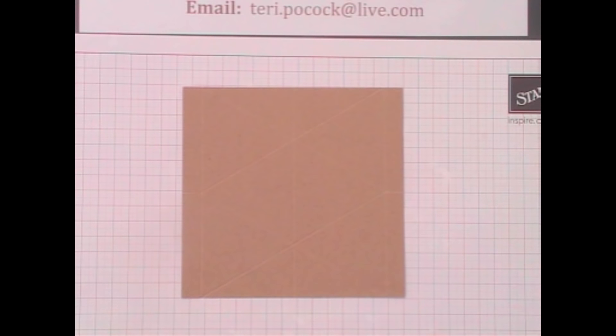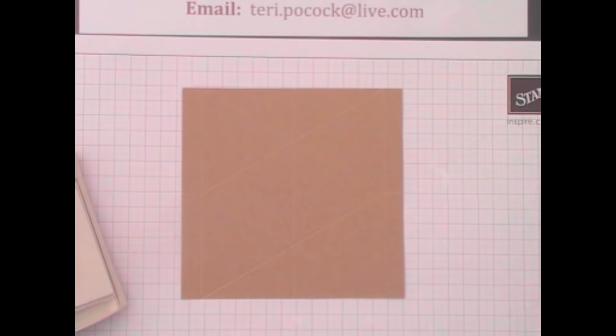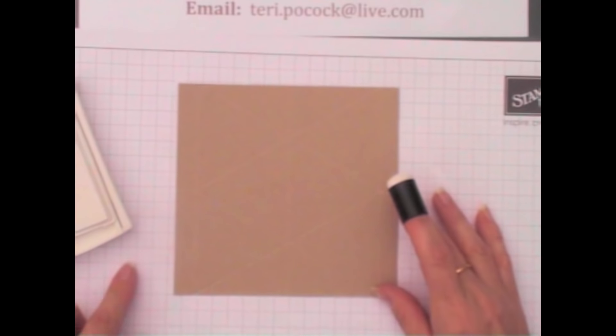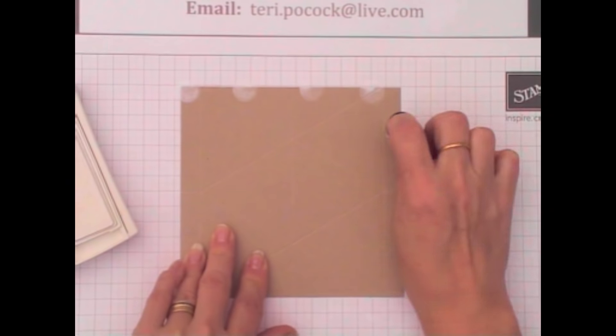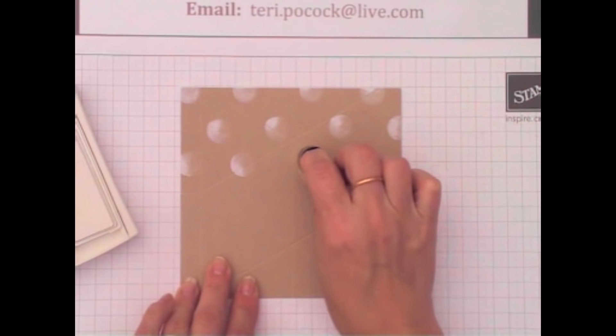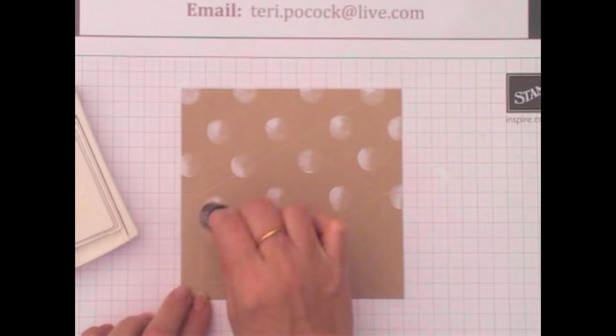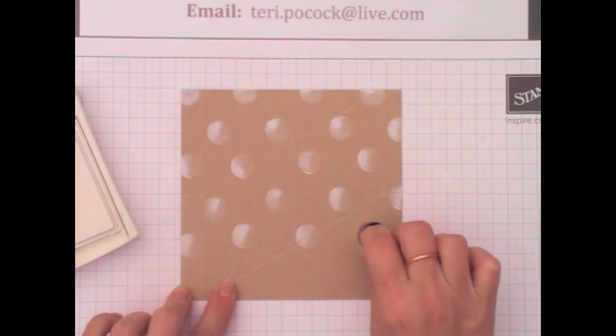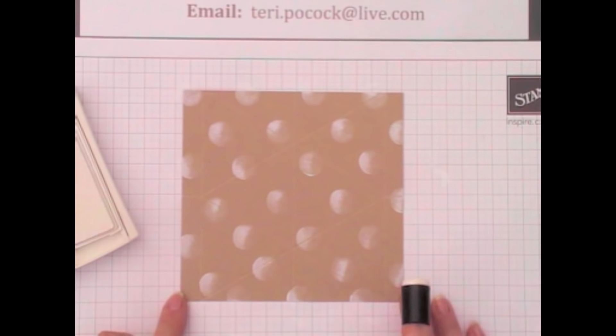The next thing I want to do is stamp the background. I'm using our Whisper White craft ink for that together with a sponge dauber. So I load up my sponge dauber with ink and then stamp on my cardstock. Because I wanted to make so many of these for my convention swap, I needed a quick method of stamping my background. So this was perfect really. You don't need to reload your dauber each time like you would a stamp. So you can do it quite quickly.